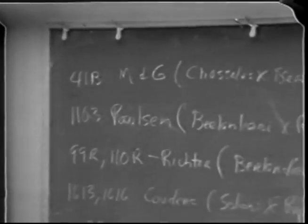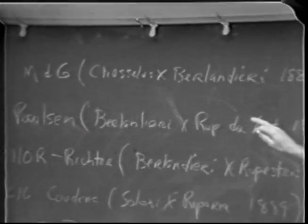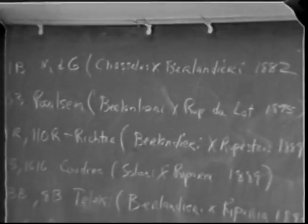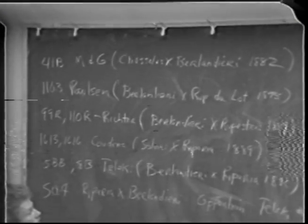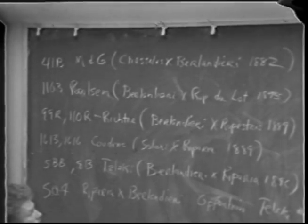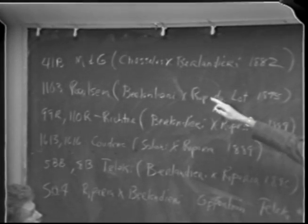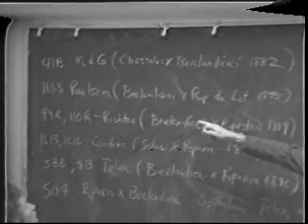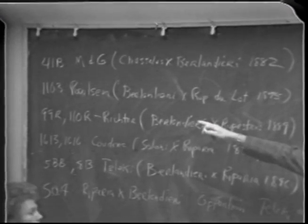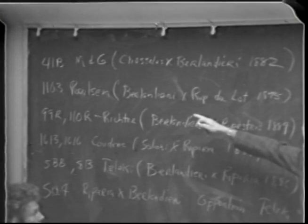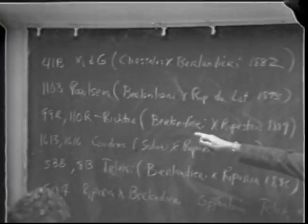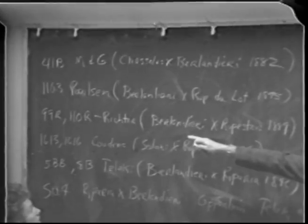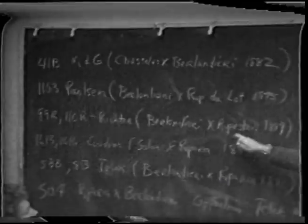Here's a list of some rootstocks and the crosses involved. There's 41B, by Millardet de Grasset — he crossed Chasselas d'Or, a well-known European table variety that also makes an excellent wine, with Berlandieri back in 1882. Then 1103 by Paulsen — he put out several in a numbered series, all Berlandieri x Rupestris hybrids. St. George is a Rupestris. Another breeder, Richter, had two famous ones: 99R and 110R, both Berlandieri x Rupestris hybrids.